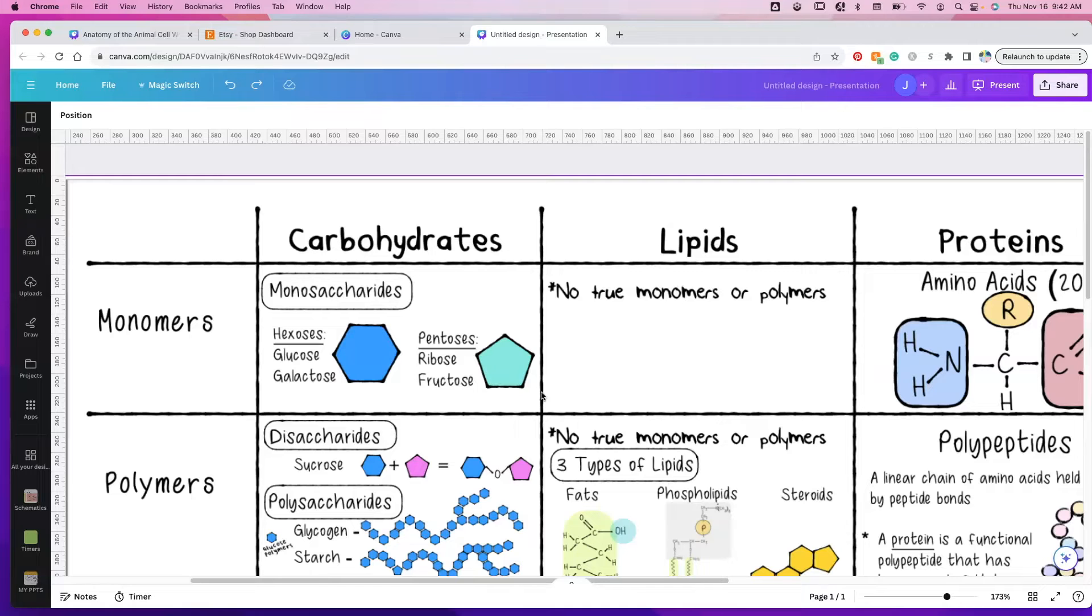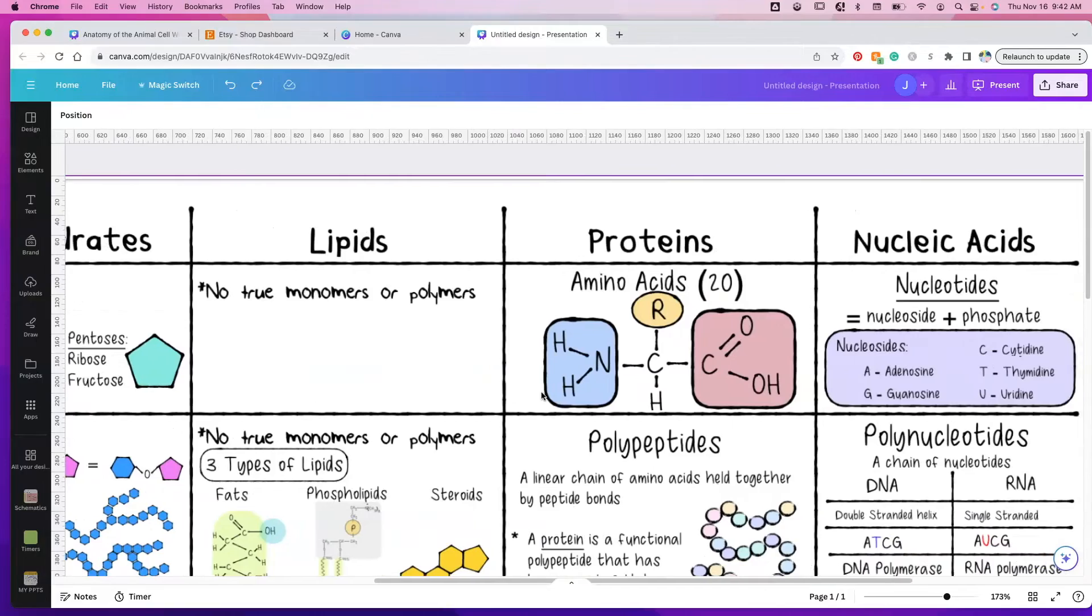So let's walk through this a little bit. On the top we have the four macromolecules: carbohydrates, lipids, proteins, and nucleic acids.